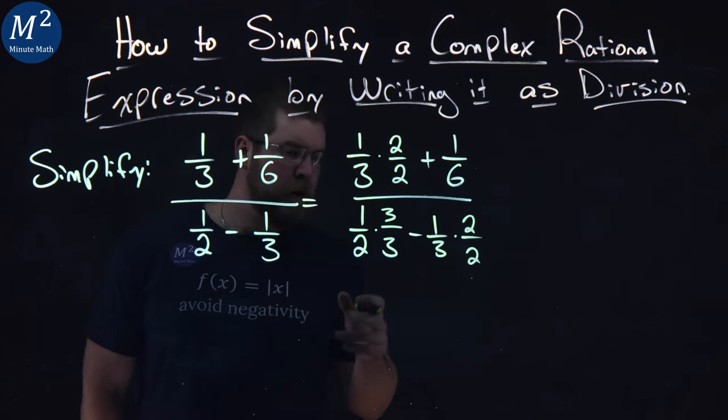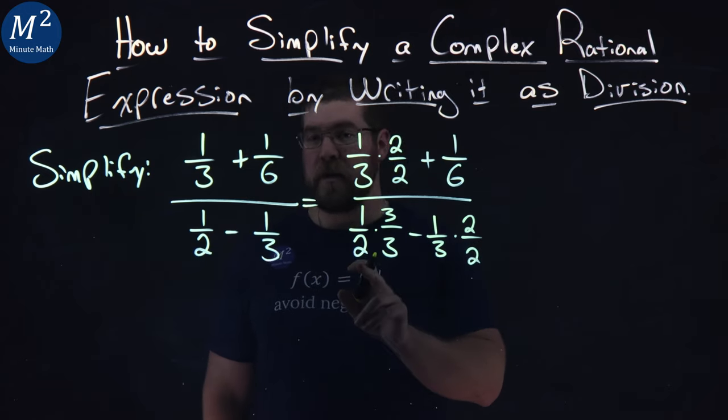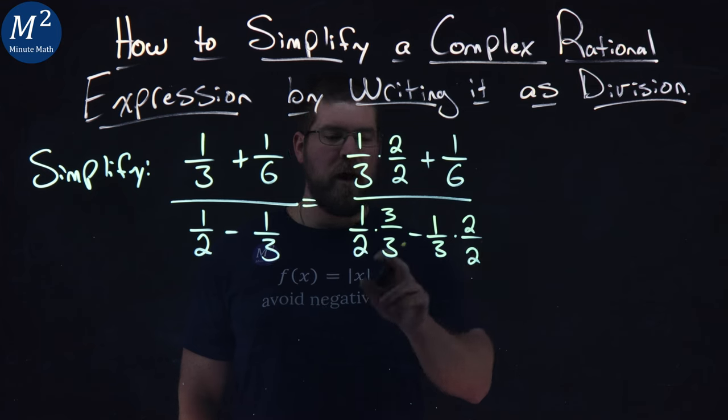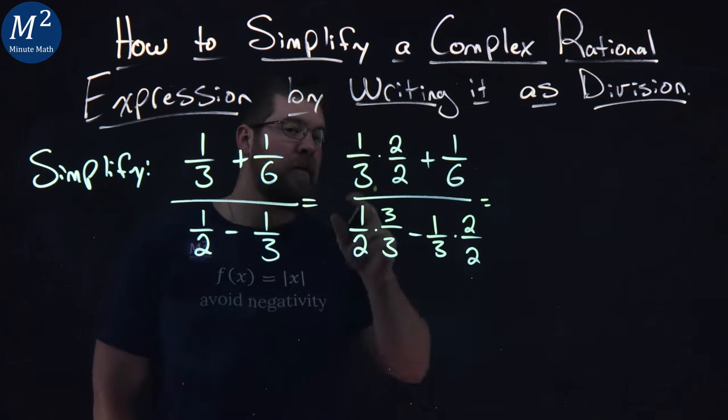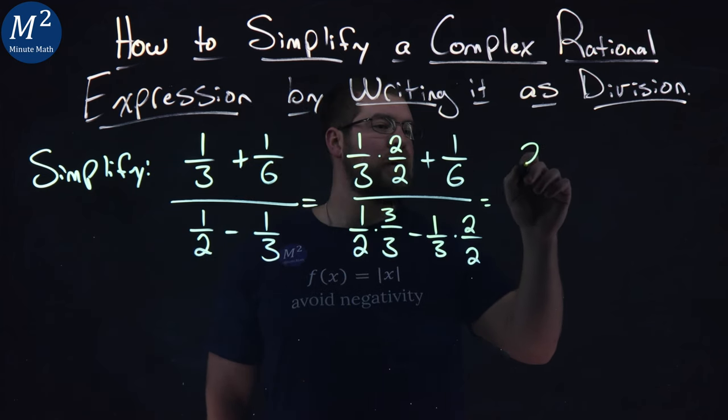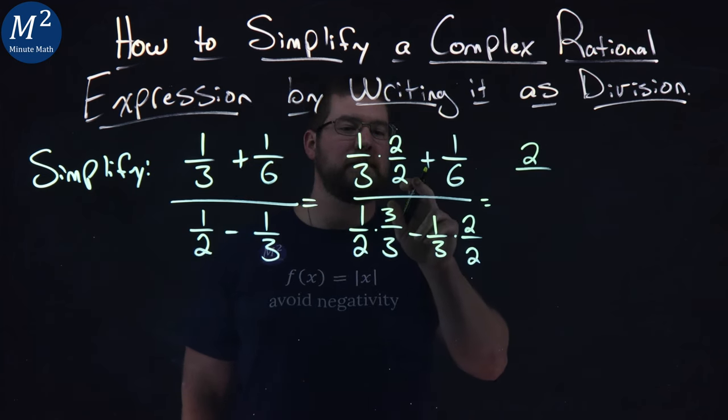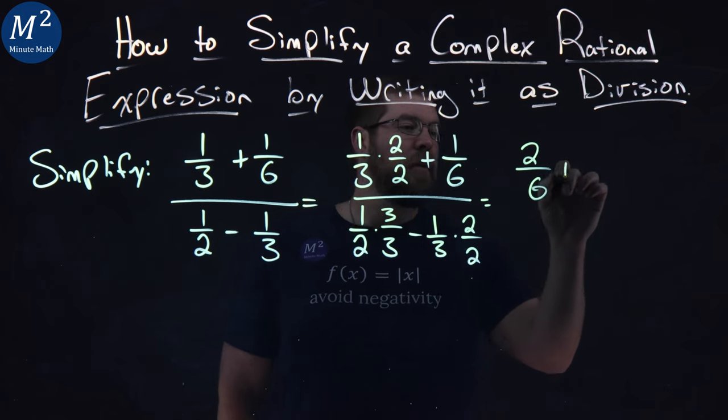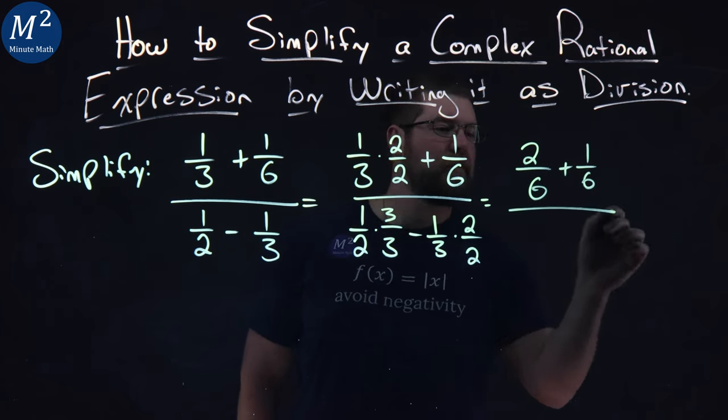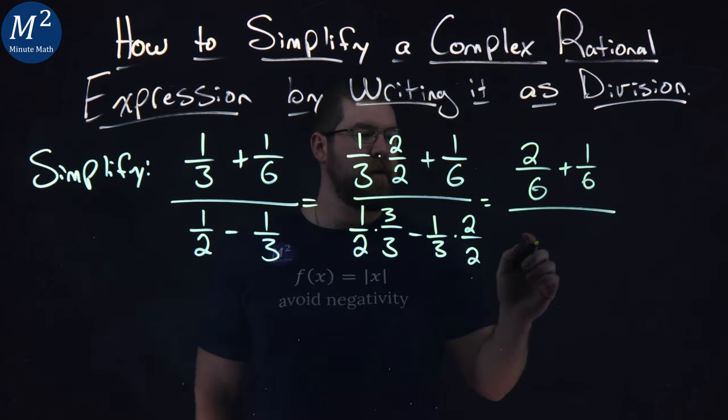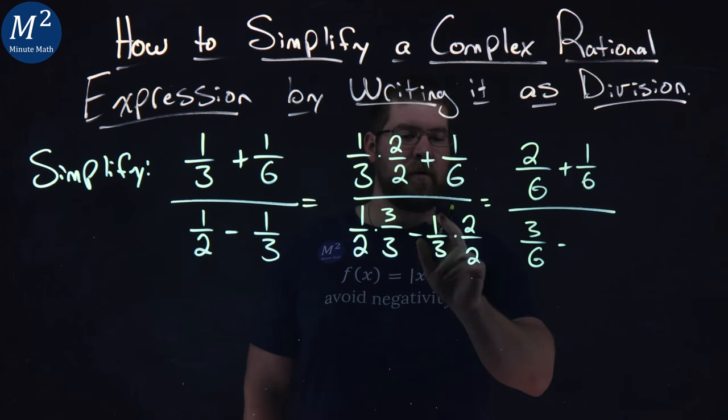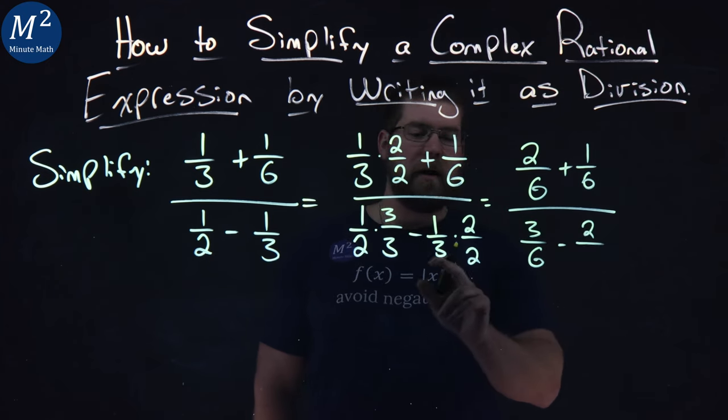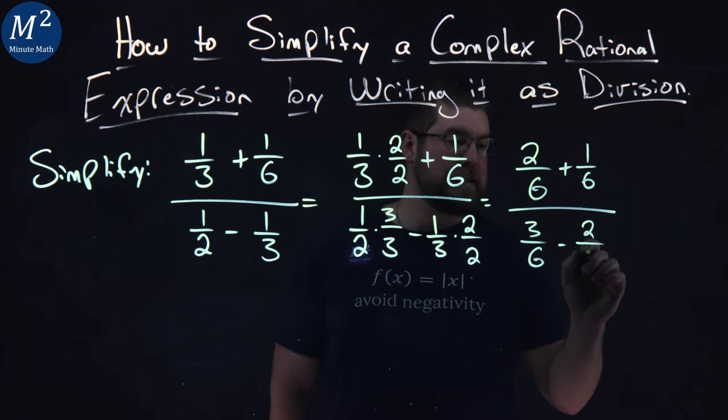What does that give me? Well, I picked those numbers because it was the opposite denominator, right? 2 and 3 weren't the same, but 2 times 3 both gives me 6, the same denominator. Simplifying this out, 1 times 2 is 2, so I have 2 over 3 times 2 is 6, plus 1/6, over 1 times 3 is 3 over 2 times 3 is 6, minus 1 times 2 is 2, and 3 times 2 is 6 as well.